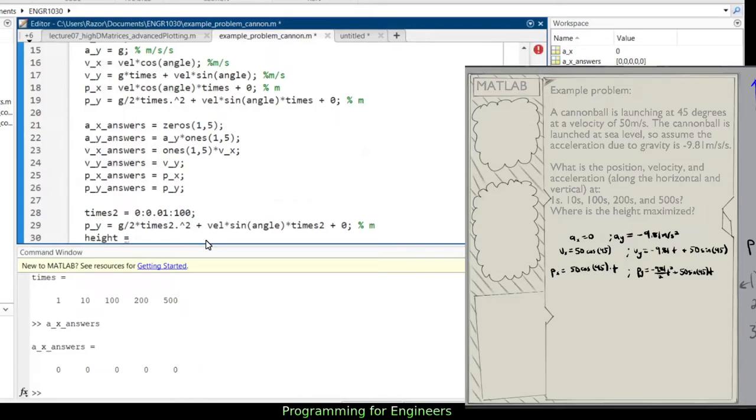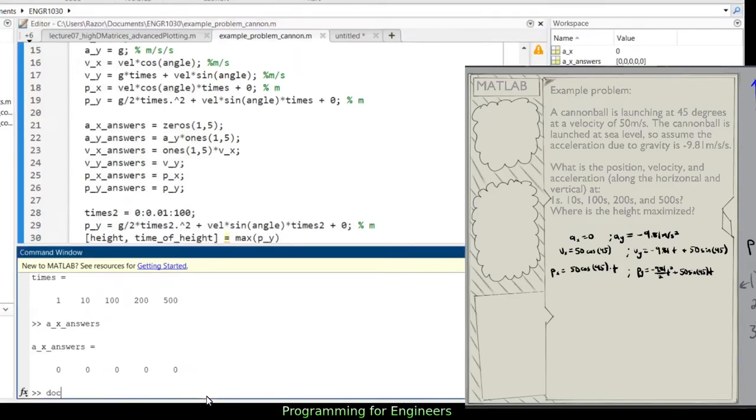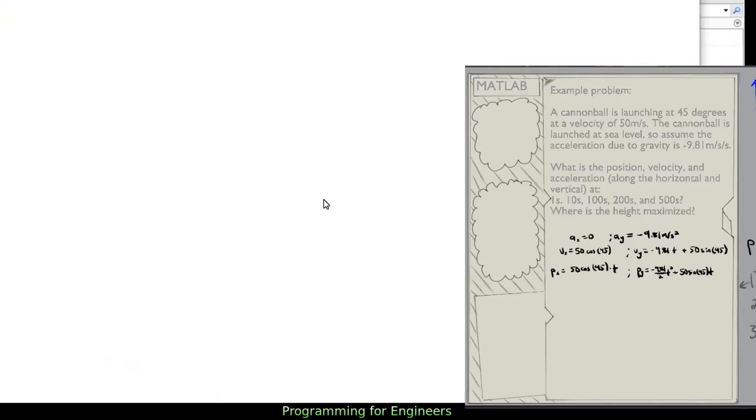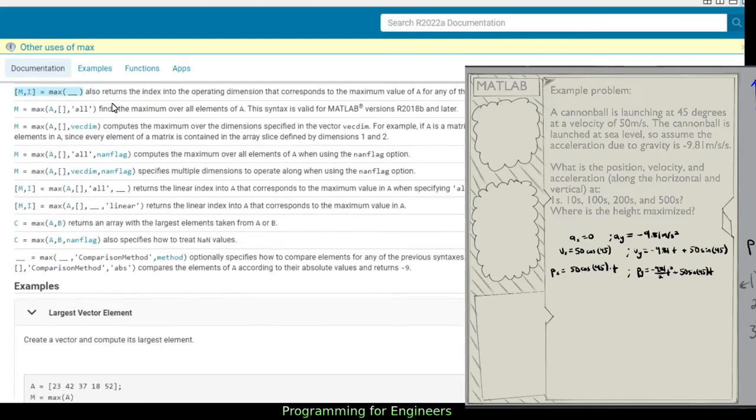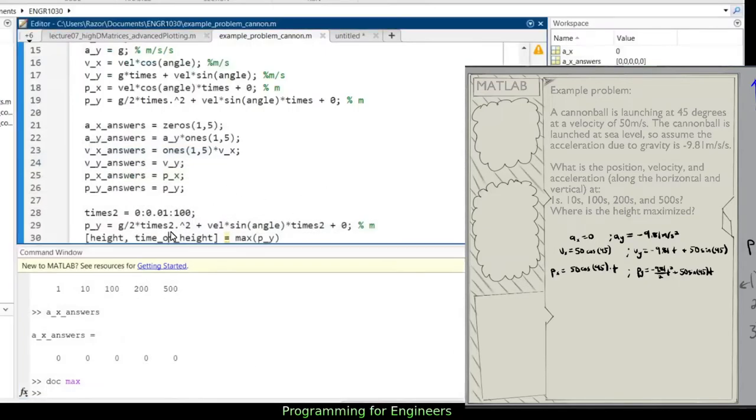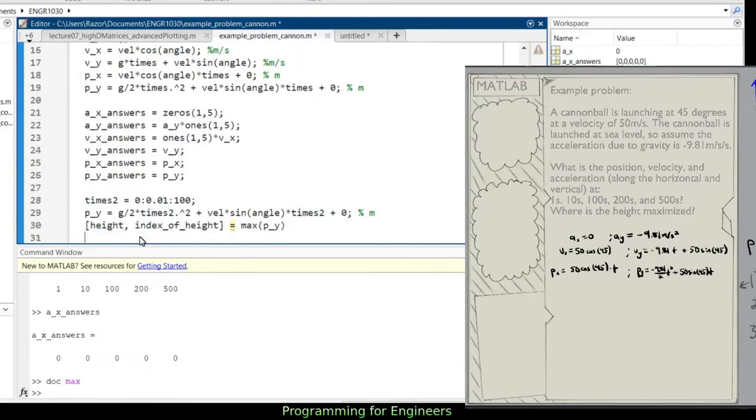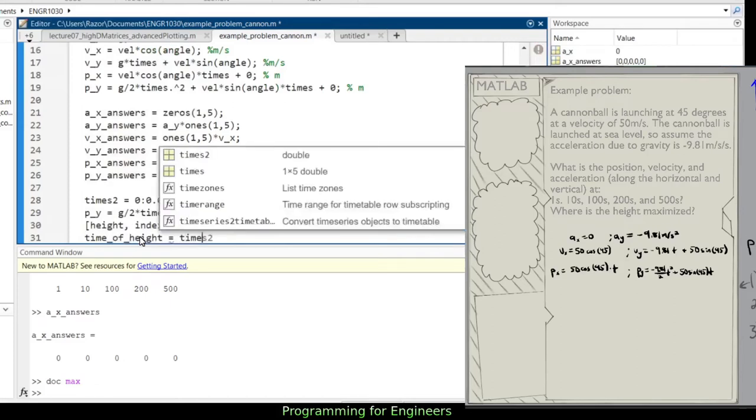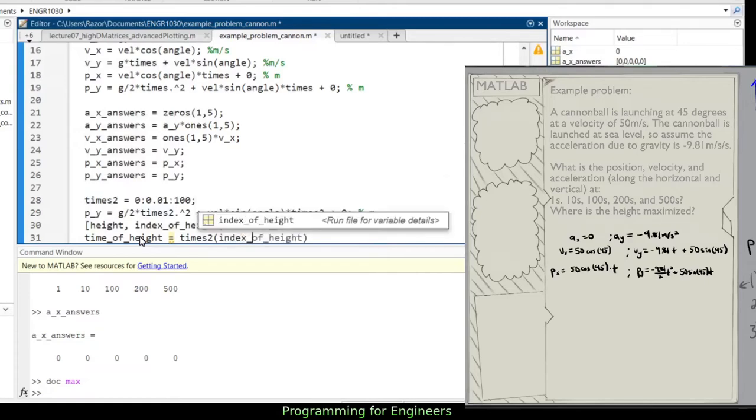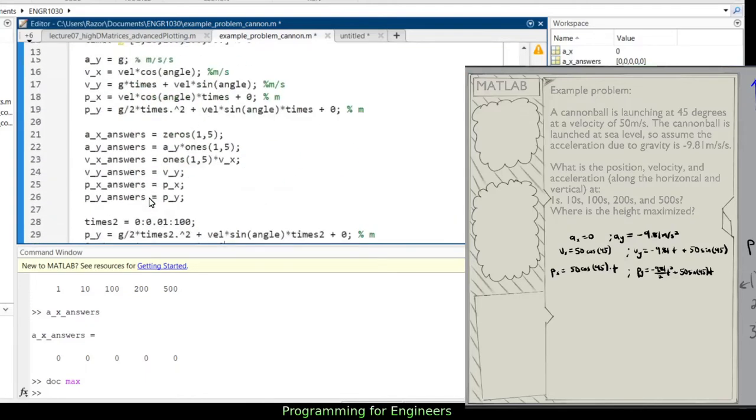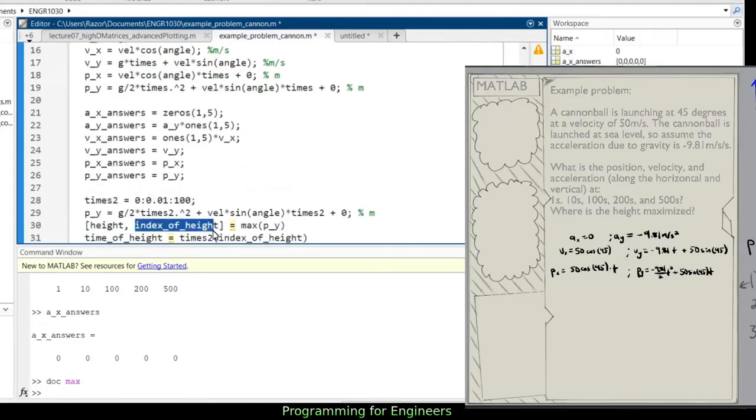So now I can do times2. And really I just need py, I'll only grab that one, and switch to times2. And then max or height equals max of py. That'll be height of. And I'll double check with doc. So it's m i, where the i is the index. So did I put this correct? Yes. Height, this would be index of height.